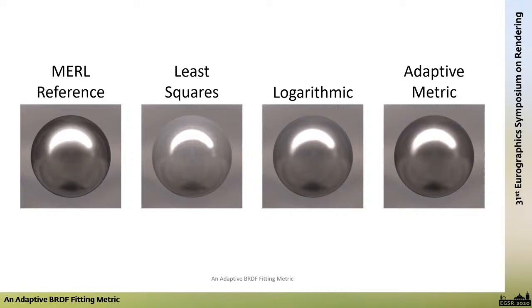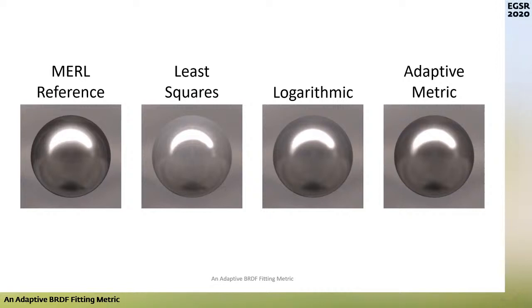We have developed a new fitting metric that achieves even more perceptually accurate fits than the logarithmic metric. Here we see our fit of nickel with the Cook-Torrance model. The diffuse color, best seen in the top of the sphere above the bright specular highlight, is clearly far more accurate.